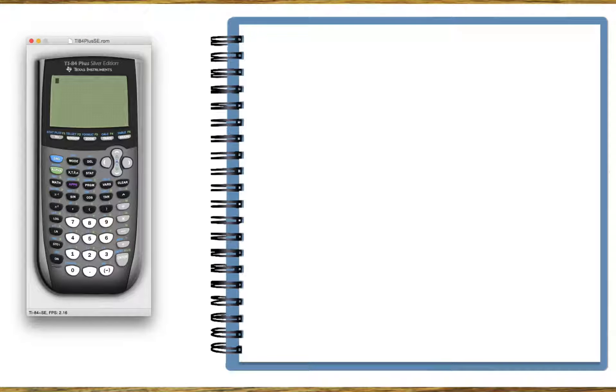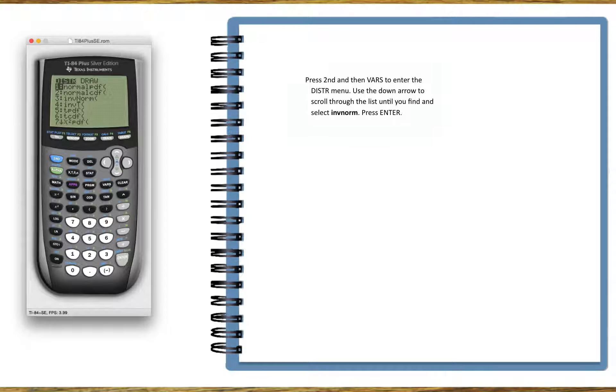Let's find a z-score given that we have a shaded area from the normal standard distribution. On the calculator, press 2nd and then VARS, which invokes the distribution menu.